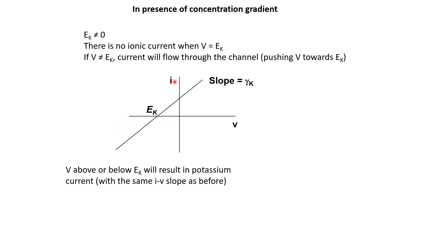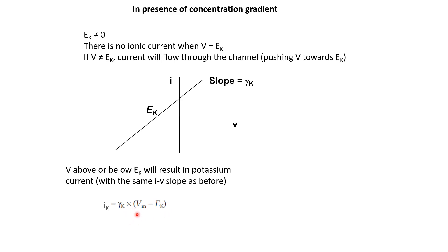We can now describe the relationship between I and V with a slightly modified equation. Instead of writing current equals V over R or V times conductance, we write: current equals conductance times (V minus Ek). The current is proportional not directly to V, but to how different V is from Ek — it is proportional to the difference between the membrane potential and the equilibrium potential for potassium ions.